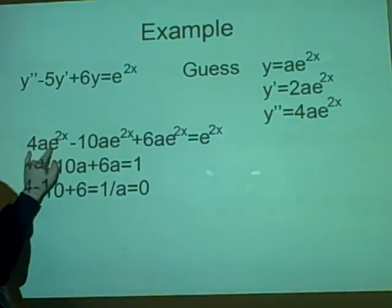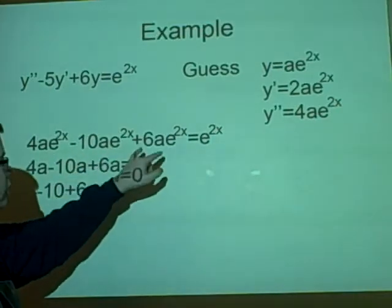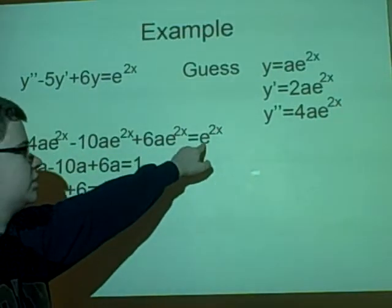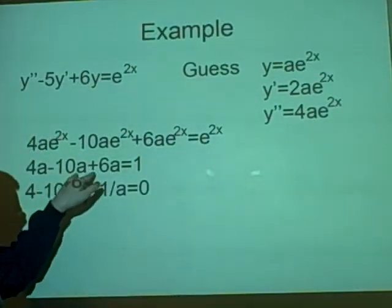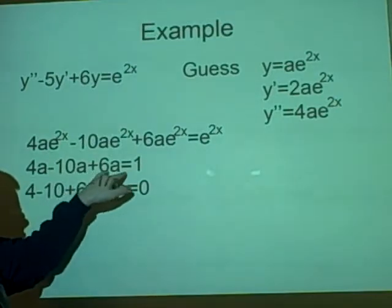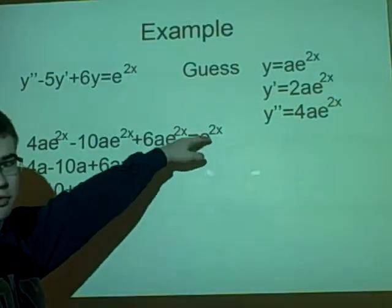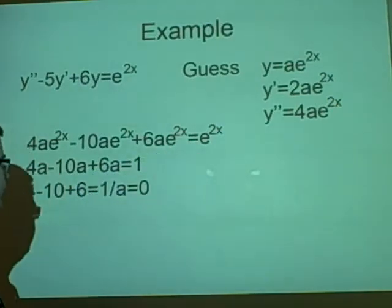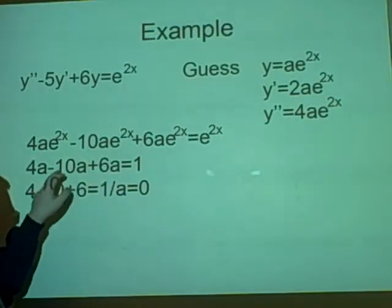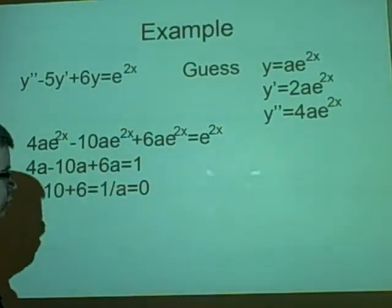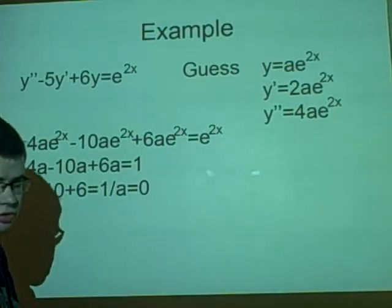Which gives us 4a*e^(2x)-10a*e^(2x)+6a*e^(2x)=e^(2x). We can cancel the e^(2x)'s. They cancel out. Then we're left with 4a-10a+6a=1 because e^(2x) divided by e^(2x) is 1 over here. So then we can move the a's over to give us 4-10+6a=1/a, and 4-10+6a is 0. So we have 0=1/a. And what use is that? Because we move the a up and we get 1=0, which is just no use at all.